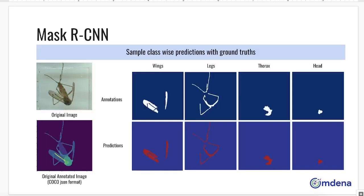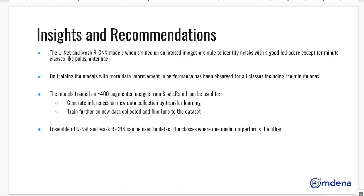These are some sample class-wise predictions compared to the ground truth by Mask RCNN. Finally, as a part of the observations, we observed that some of the classes are being predicted better by the U-Net and some by Mask RCNN. Hence, using an ensemble of these two techniques would help us generate the best IOU scores for each of the classes.